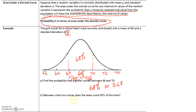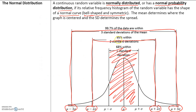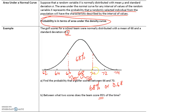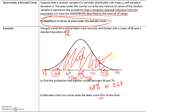Between what two scores does the team score 95% of the time? The empirical rule tells us 95% of values fall within two standard deviations. With a mean of 68 and standard deviation of 2, two standard deviations gives us 72 and 64. So 95% of the time, the team scores between 64 and 72.